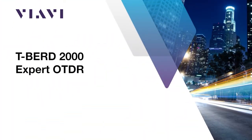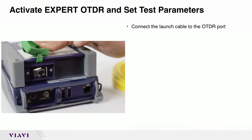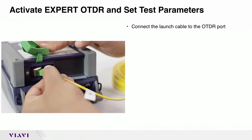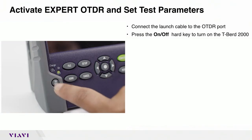The following video shows users how to configure the TBER 2000 OTDR in the EXPERT OTDR mode. Always inspect before you connect. Always ensure your fiber end faces are clean and inspect and clean both sides before you make any connections. Connect the launch cable to the OTDR port. Press the ON-OFF hard key to turn on the TBER 2000.